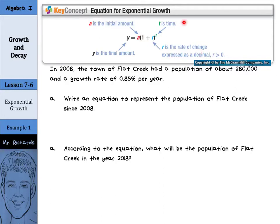Let's see if we can use this. In 2008, the town of Flat Creek had a population of about 280,000 and a growth rate of 0.85% per year. Write an equation to represent the population of Flat Creek since 2008.